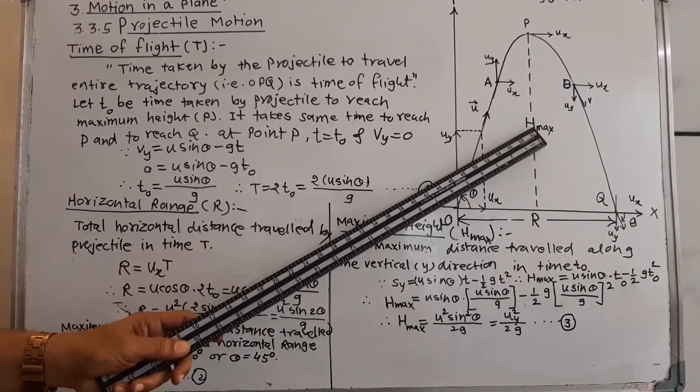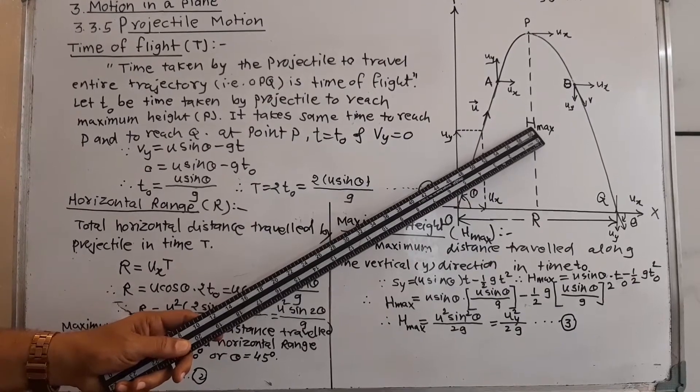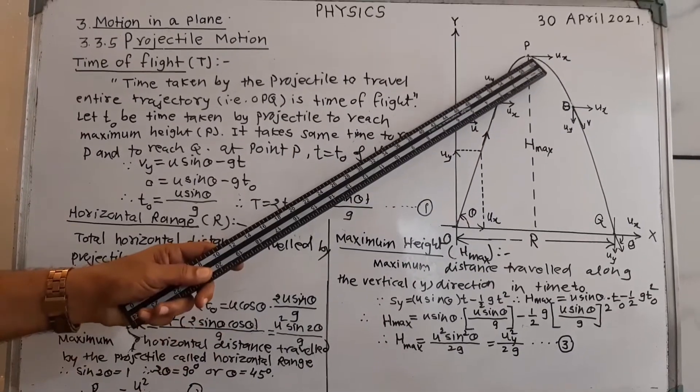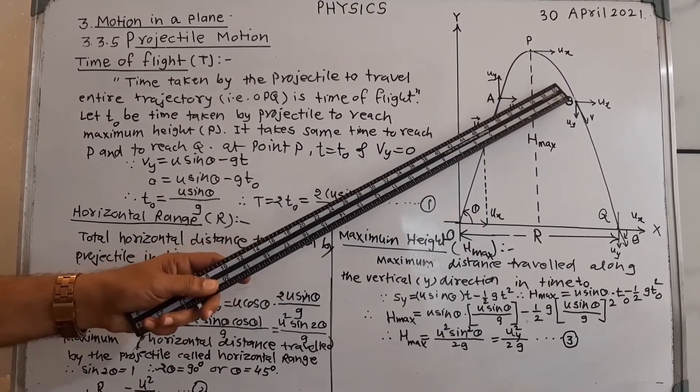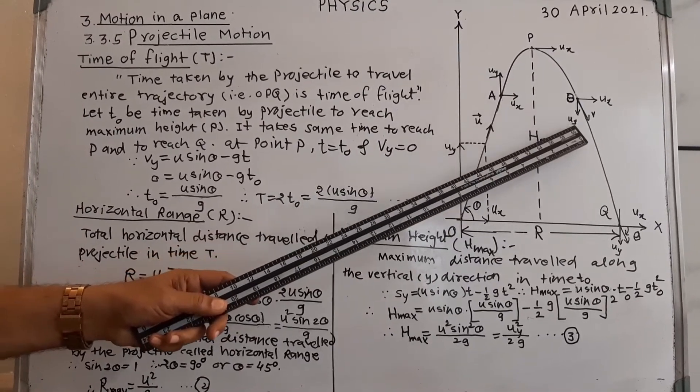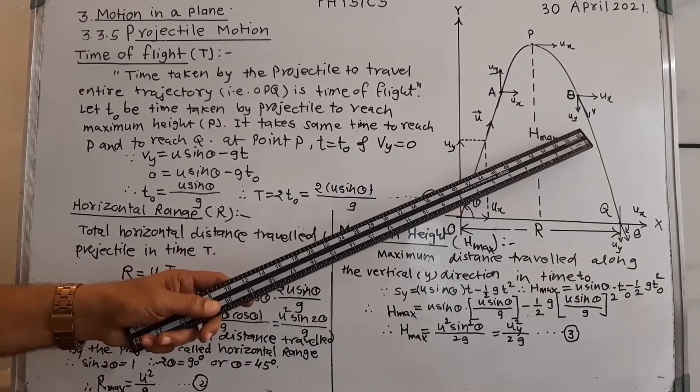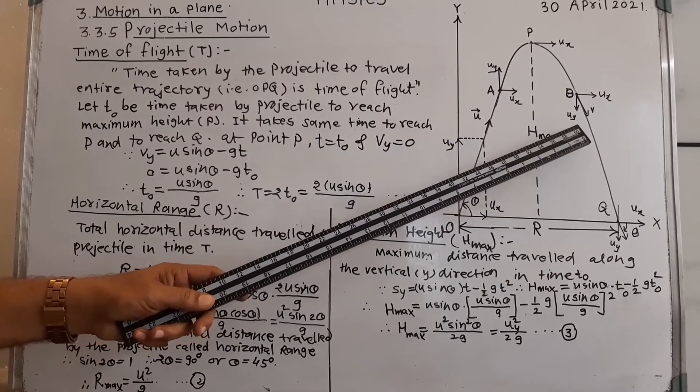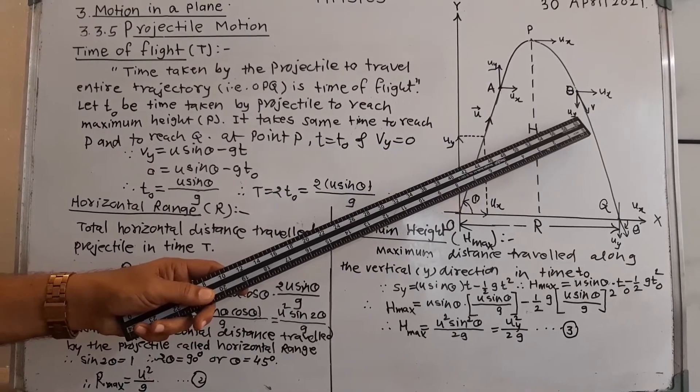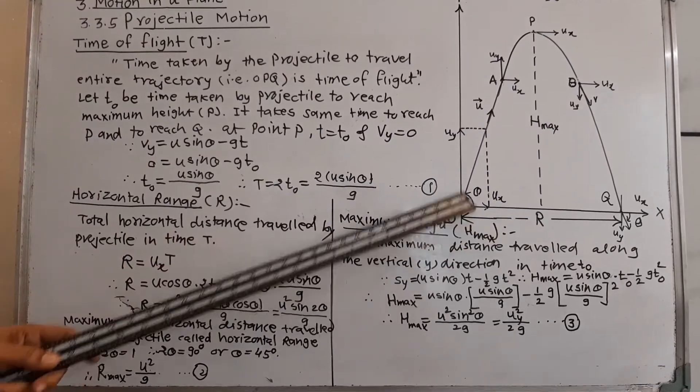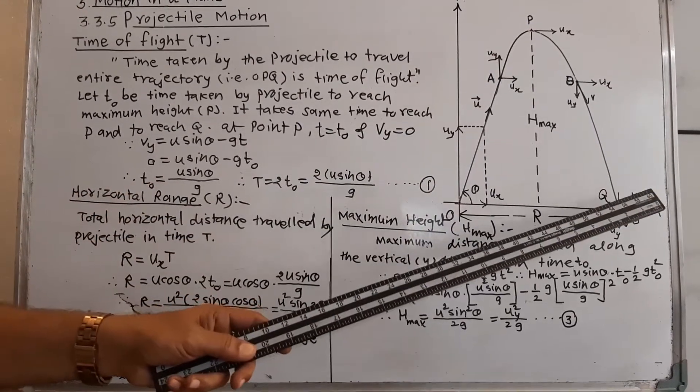The height of the projectile is maximum height. The velocity starts decreasing, the velocity starts increasing in the downward direction due to the earth's gravitational field.